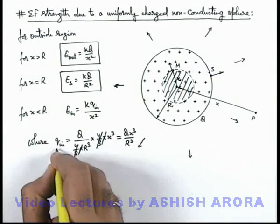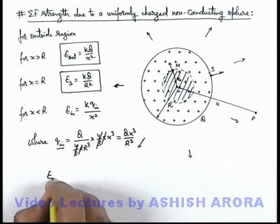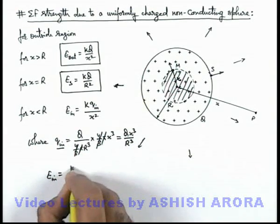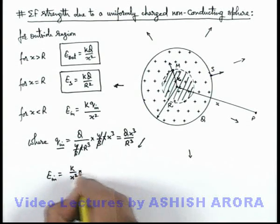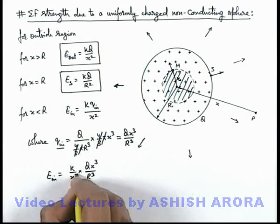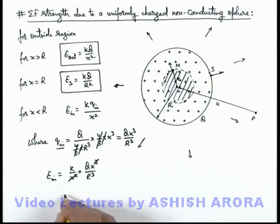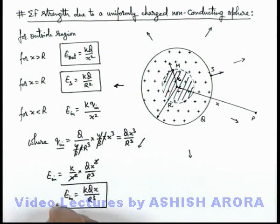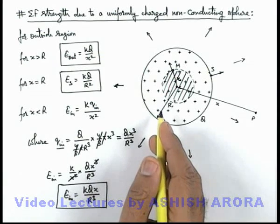If I substitute this q_inside here, then the inside electric field will be k/x² multiplied by Q·x³/R³. So the result we are getting is E_in = kQx/R³. This is the expression we use for the electric field strength inside a uniformly charged solid sphere.